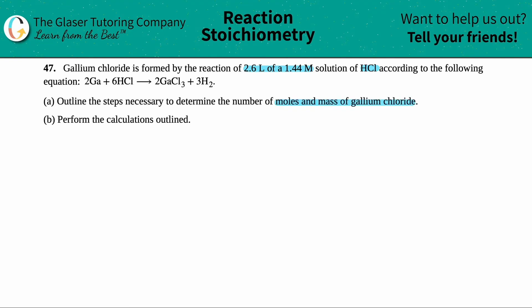So the first thing I got to figure out is which one of these is gallium chloride, right? Well, it's got to be the compound that has gallium in it and it has chlorine in it. Not this one. Not this one. Ah, this guy. So they want us to find the moles and the mass of GaCl3.